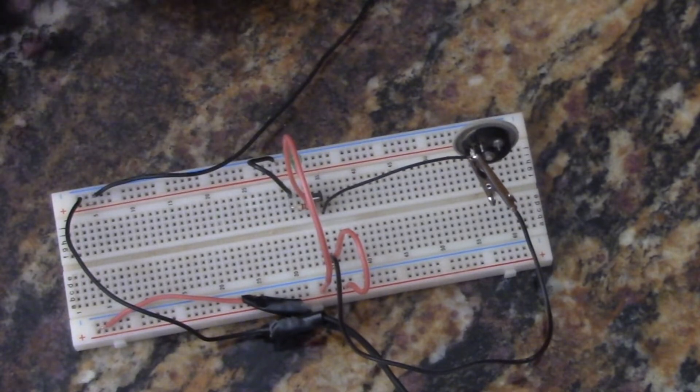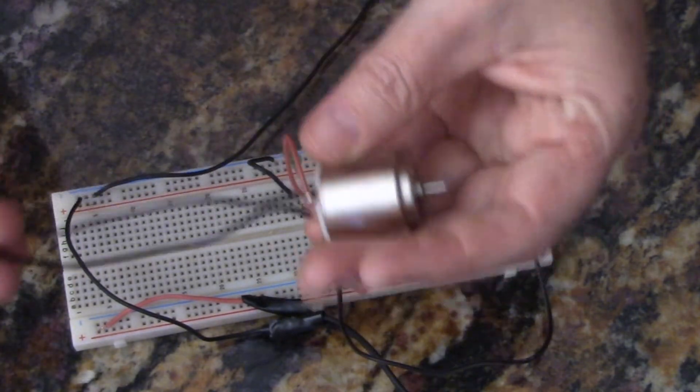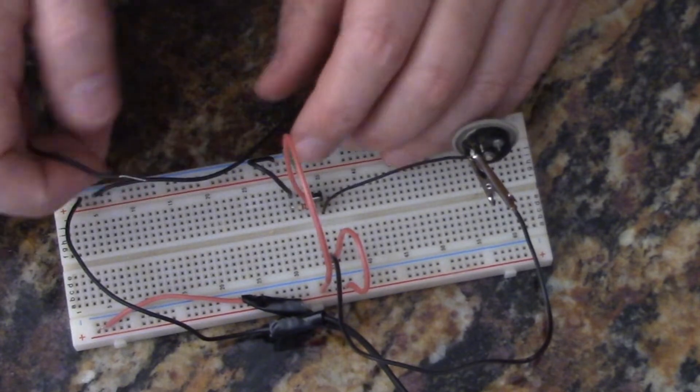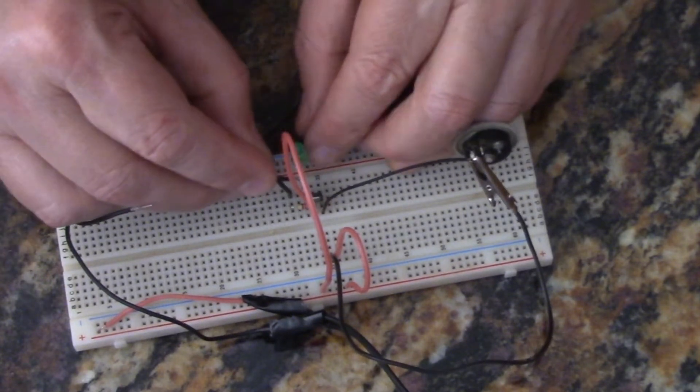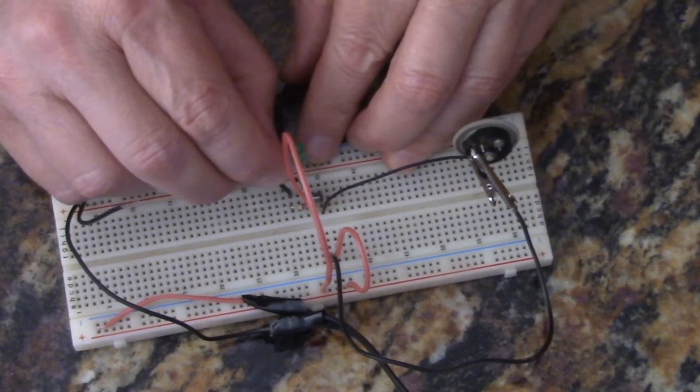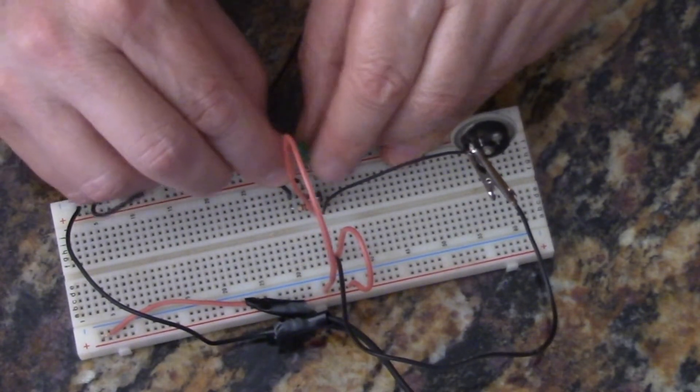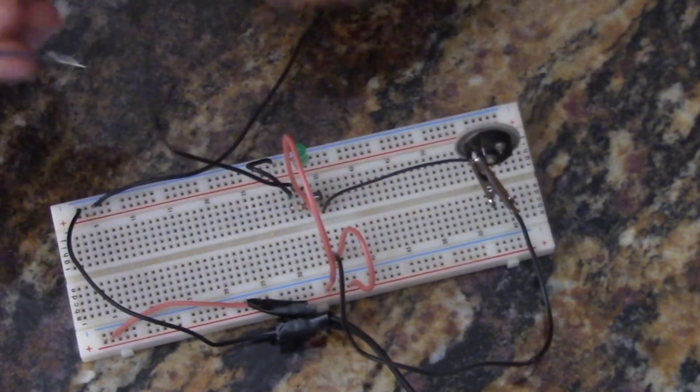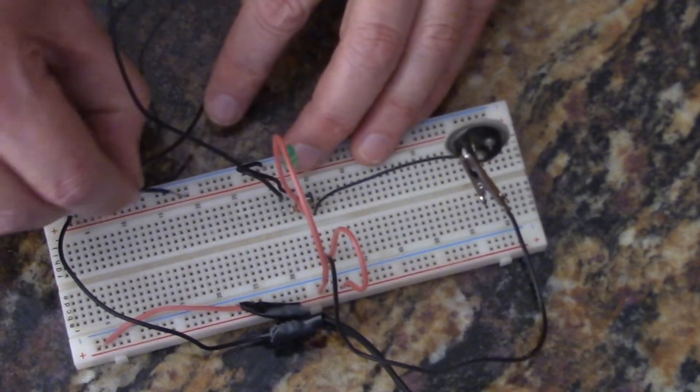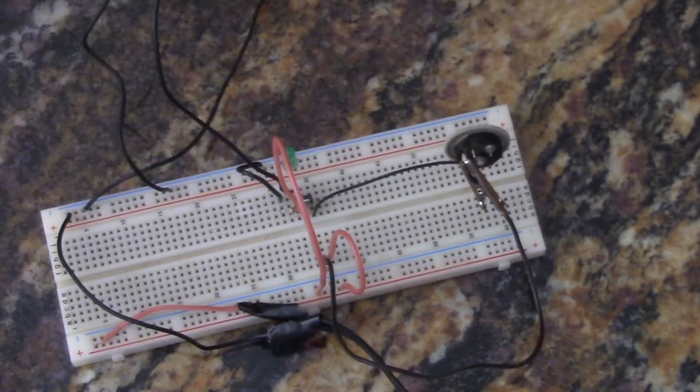So but we can also power a DC motor. So here's just a little DC motor and I'm going to put that on the same lead, which is going to be the emitter. And we're going to put this to ground as well. Okay, so the motor is off.